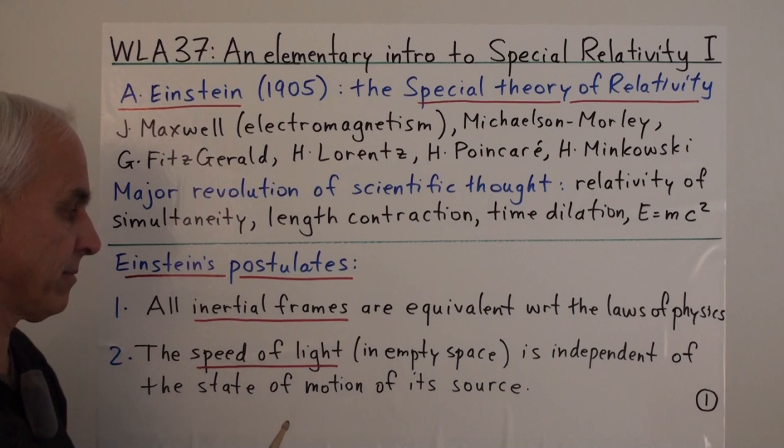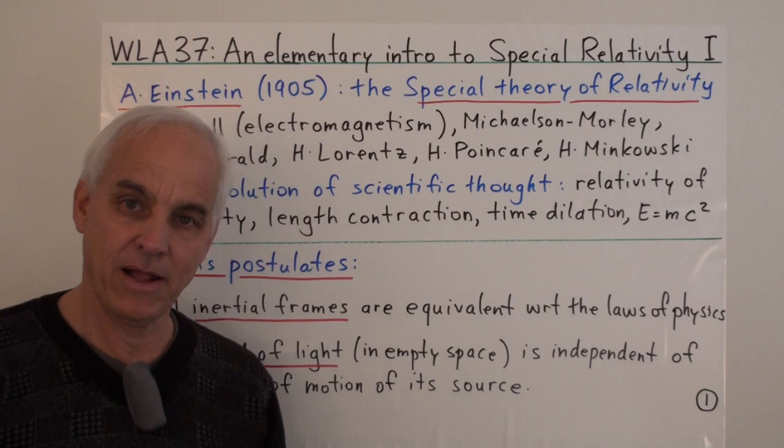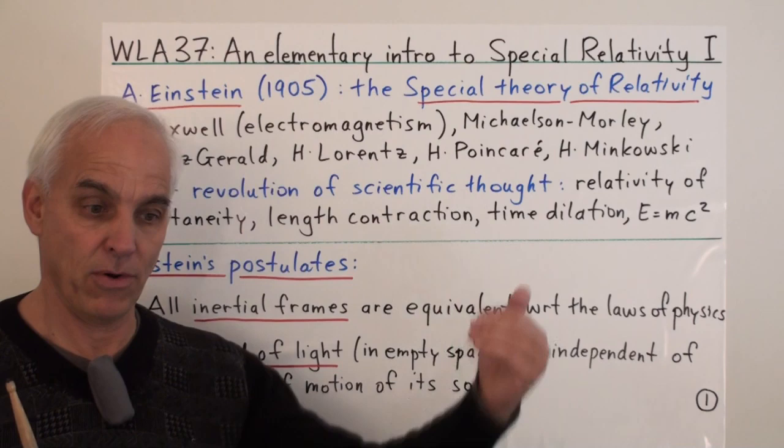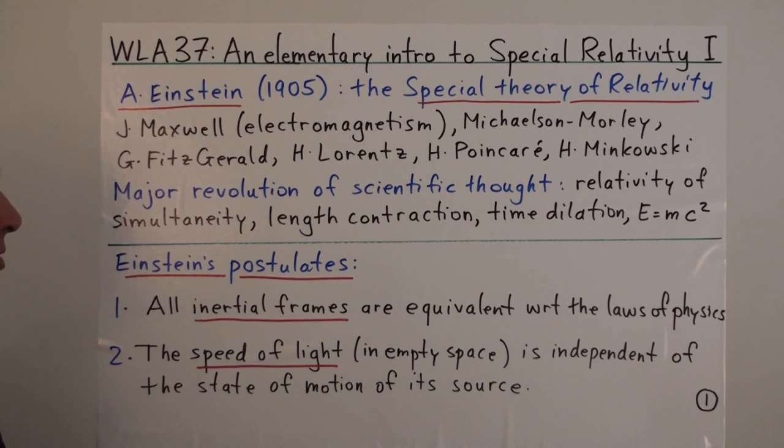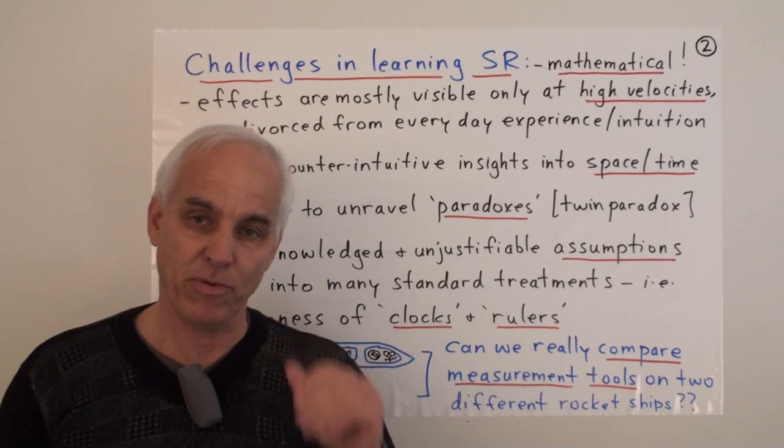And the second one is that the speed of light, at least in empty space, is independent of the state of motion of its source. So even if you have a rocket ship going very fast in that direction and it shoots a beam of light ahead of it, that beam of light will still be measured as having a speed of light by all observers, whether they're on the rocket ship or going transverse or going in opposite directions. So from these two postulates, he was able to drive all of these very interesting and surprising conclusions.